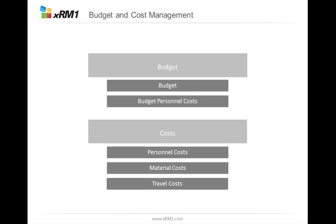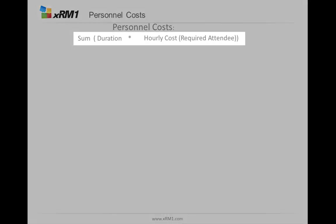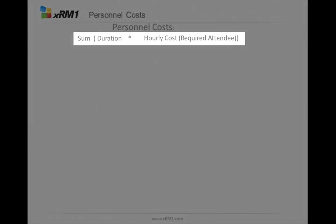We also have costs, and the costs are split into three parts: budget of personal costs, budget of material costs, and budget of travel costs. The personnel costs are calculated by the time entries that are done — it's the sum of the duration of the time entries times the hourly cost of the people entering their time.